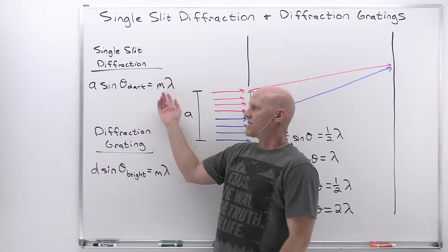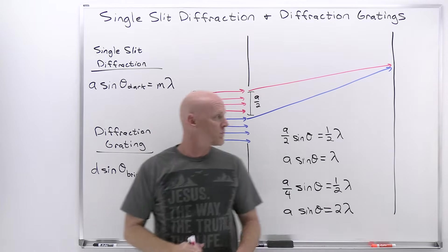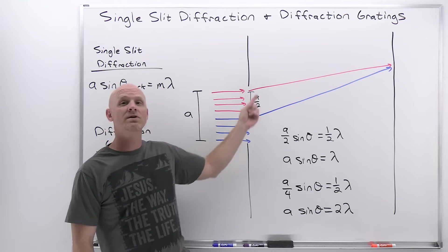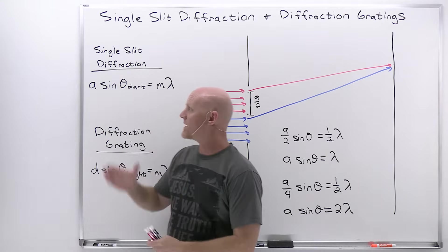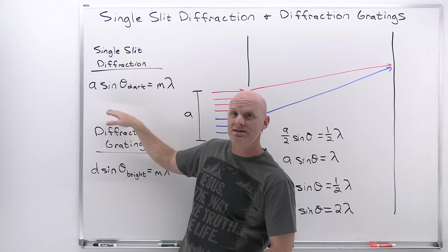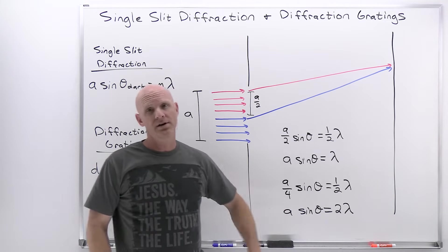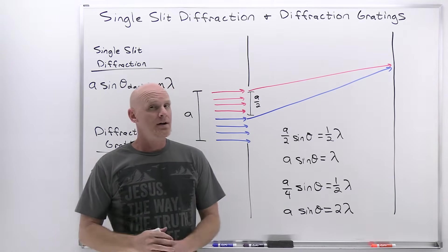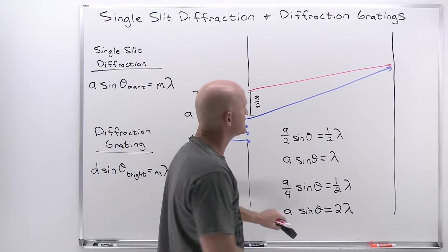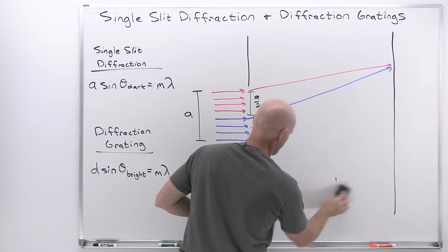Now, you might look at this and think it should look like constructive interference since it equals m lambda. But keep in mind the distance between the paired waves was not A but A over 2, which is why it has this form — it is indeed destructive interference. After establishing that, it's essentially plug and chug.